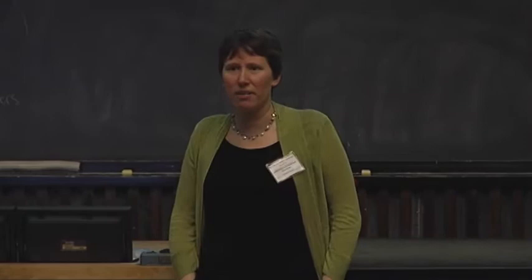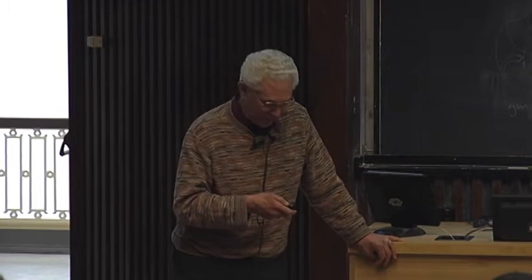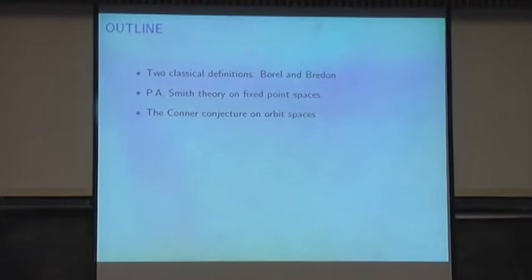I'll introduce Peter May from Chicago, who is going to be telling us about equivariant cohomology. Equivariant cohomology to non-algebraic topologists means Borel cohomology. To an algebraic topologist these days it means Bredon cohomology, and I'll explain what that is. I'll use it to give a very elementary proof of Smith's classical theorem on fixed points of G-spaces, and also a proof of the Conner conjecture on orbit spaces.